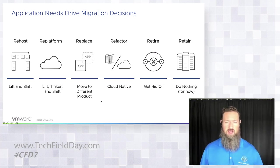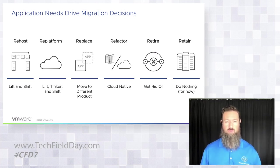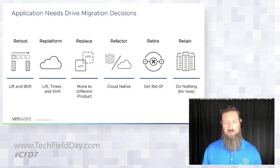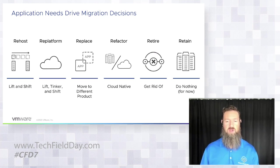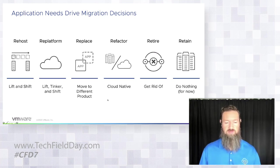These six R's explain why we're moving, what we're moving, and what's the best time to move something. We could say we want to containerize everything, but that doesn't make sense for all applications. This is where we feed things into different buckets — how we're going to move them around, or leave them in the data center if needed.